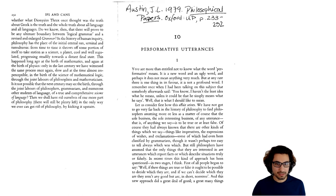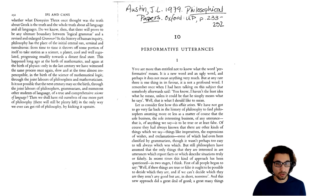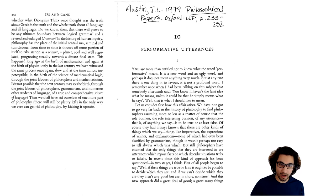Austin begins: 'We have not got to go very far back in the history of philosophy to find philosophers assuming, more or less as a matter of course, that the sole business, the sole interesting business of any utterance — that is, of anything we say — is to be true, or at least false. Of course, they had always known that there are other kinds of things which we say — things like imperatives, the expression of wishes, and exclamations, some of which had even been classified by grammarians.'